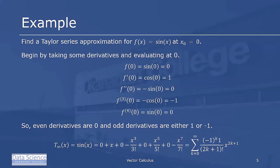Which we compactly write as (-1)^k, divided by (2k + 1) factorial, times x to the (2k + 1).